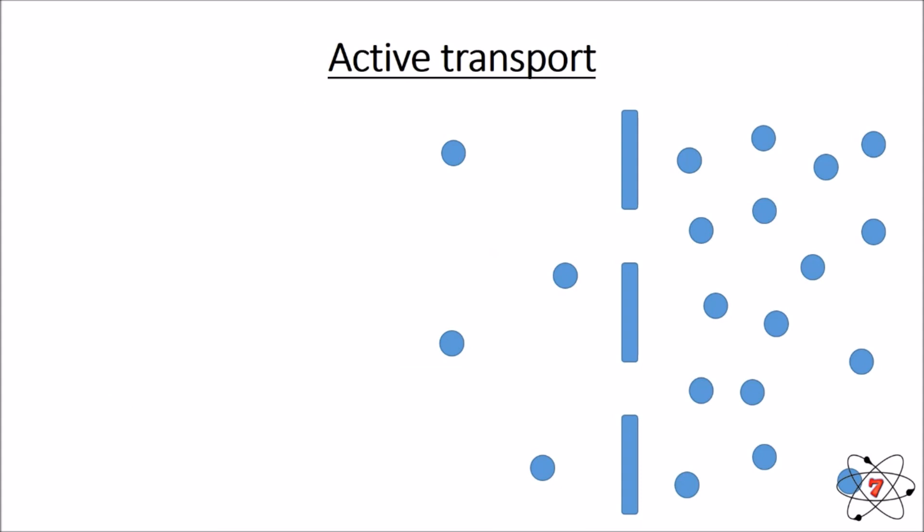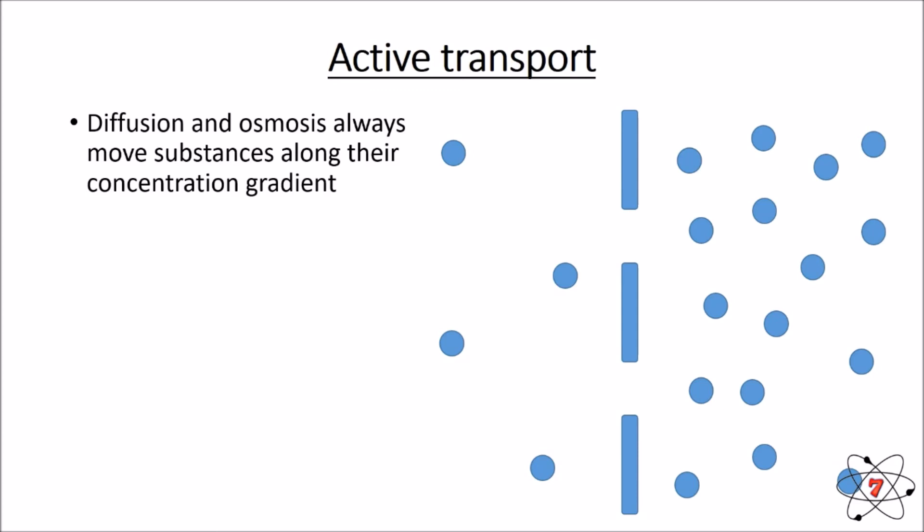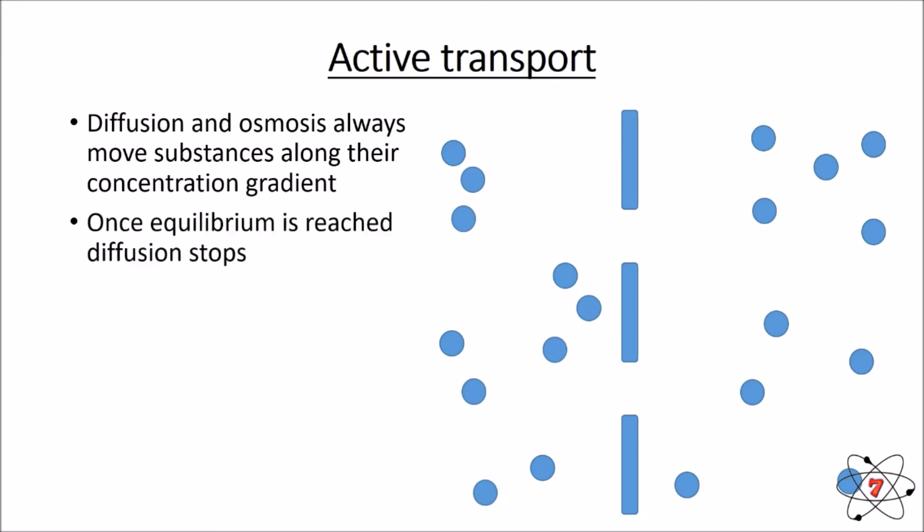Active transport is another way that substances can be moved across a membrane. In diffusion and osmosis, substances always move along their concentration gradient — from an area of high concentration to an area of low concentration. When equilibrium is reached, meaning we have the same amount on each side of the membrane, diffusion will always stop. Particles still move to each side, but there will be no net diffusion.